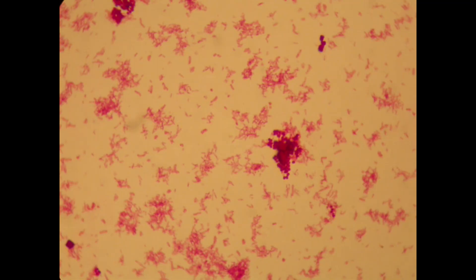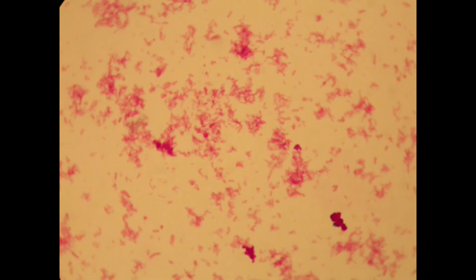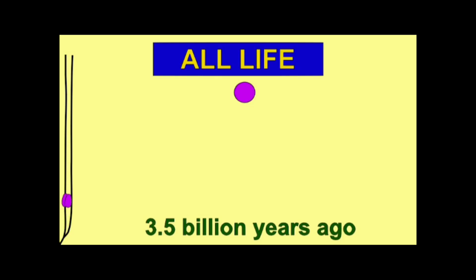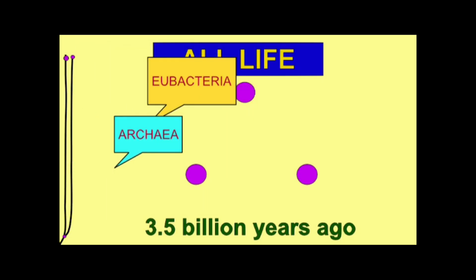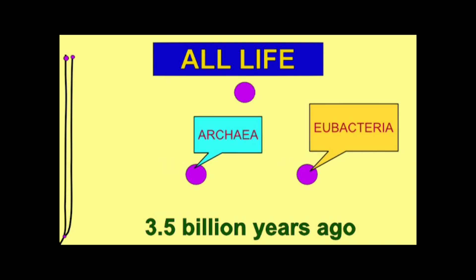So prior to 2 billion years ago, there were two domains of life: the eubacteria, the true bacteria we are most familiar with, and the archaea, a group of prokaryotic cells, many of which live in extreme environments.